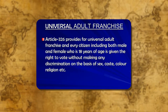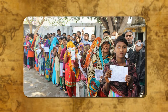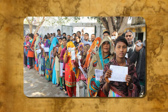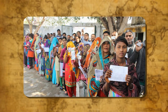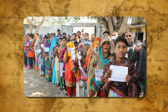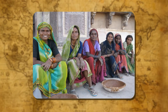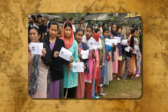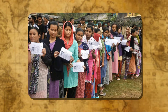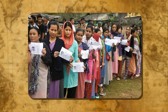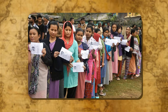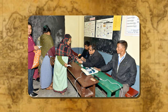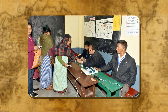Universal adult franchise is an essential aspect of all democracies. It is based on the idea of equality because it states that every adult in a country, whether rich or poor, has one vote. There is no discrimination between a household worker or a businessman. They both stand in the same queue when they cast their vote during an election. All the people have the freedom to vote for the candidate of their own choice, enjoying political equality.